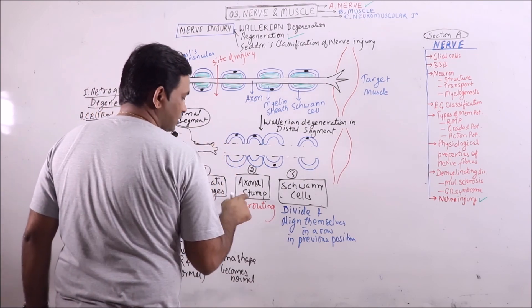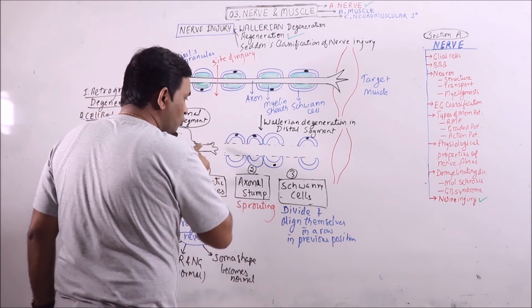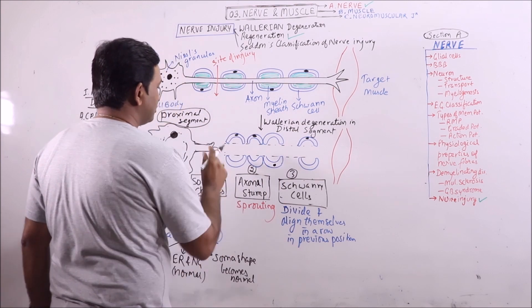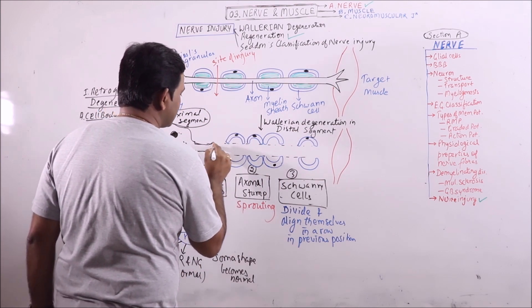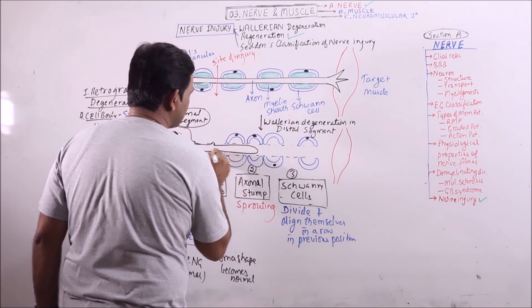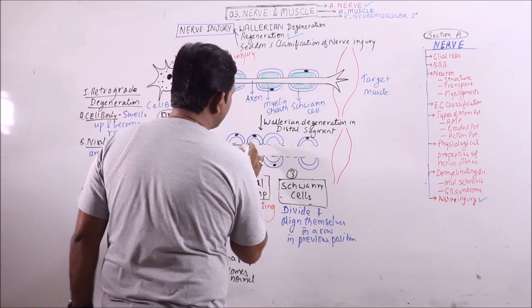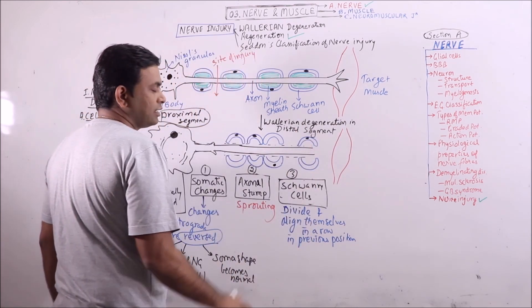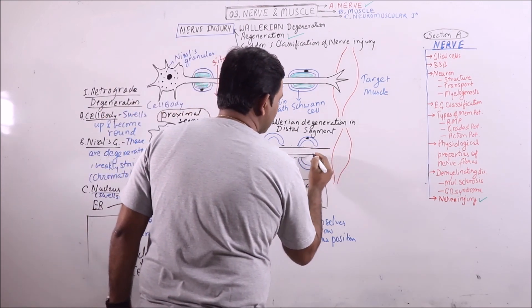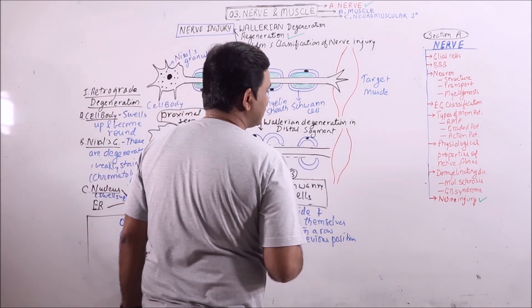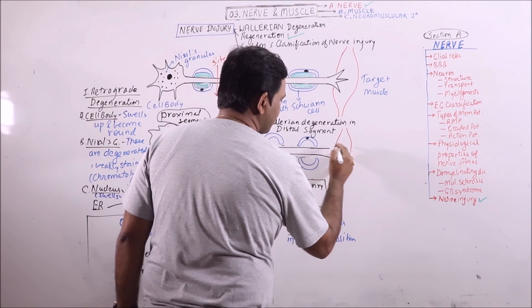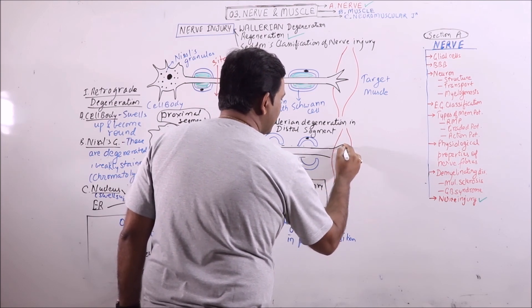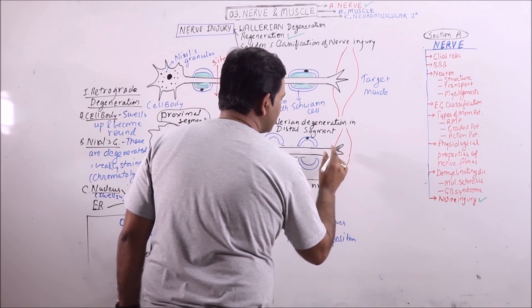Now, one of the sprouts will enter the sequence of Schwann cells like this and it will continue to grow until the target organ is reached, then it will form some branches.